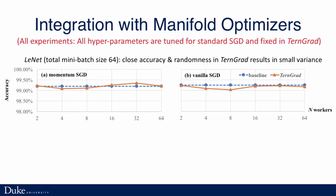In all our experiments, all hyperparameters are tuned specifically for standard floating gradient descent, and just fixed in TernGrad. These are initial experiments on MNIST. The Y axis is the accuracy, X axis is the number of workers. As you can see, the accuracy are almost the same — sometimes better, sometimes worse, but just within a small range of randomness because of the randomness in TernGrad.